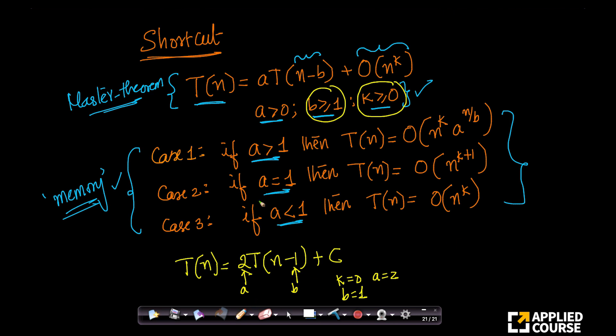Let me erase this part. Now let's try to solve this. Which case does it fall into? Is a greater than 1? Yes, it falls into this case because a equals 2. So it falls into case 1 because a equals 2. Now what is my T(n)? My T(n) would be big O of n^k. n power, what is my k? 0, n^k. So n^0 is 1. A power, what is a now? A is 2. So let's write a actually. A is 2. So 2^(n/b), what is b? b is 1. What is this same as big O of n^0 is 1, so you can ignore it. n by 1 is n itself. So you get big O of 2^n.